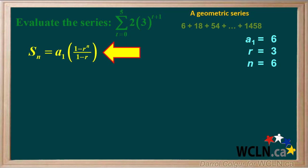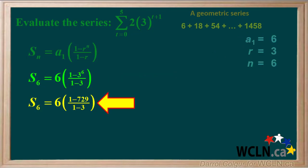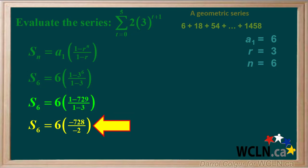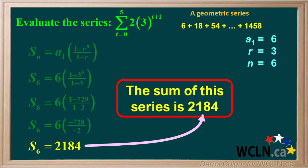Because we're dealing with a finite geometric series, we use the equation Sn equals a1 times 1 minus r to the power n, over 1 minus r. Inserting the values for a1, r, and n: 3 to the power 6 is 729. 1 minus 729 is negative 728, and 1 minus 3 is negative 2. This works out to 2,184. So the sum of this series is 2,184.